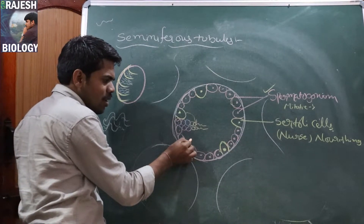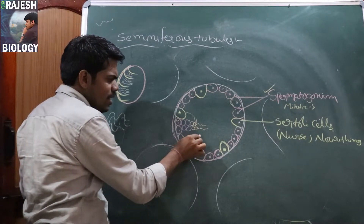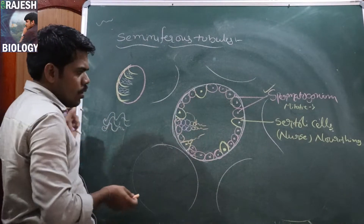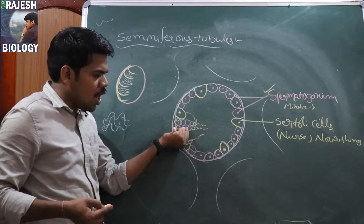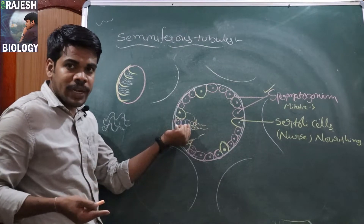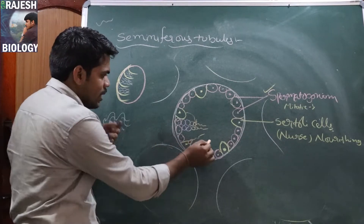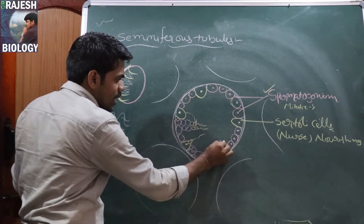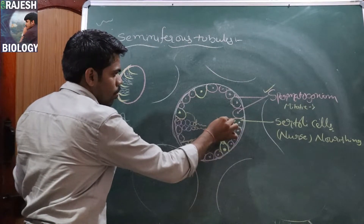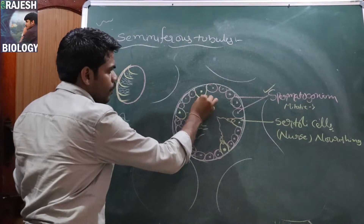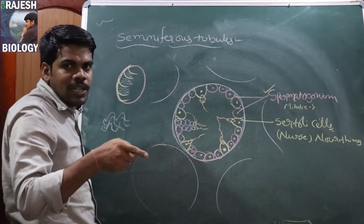Once the sperm cells are formed, they get embedded in the Sertoli cells. They are formed from the spermatogonial mother cells, and once formation is completed, the head of the spermatozoon is embedded in the Sertoli cell — like this. So sperm cells are embedded in the Sertoli cells.